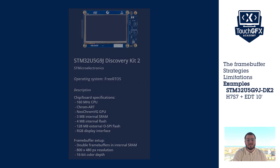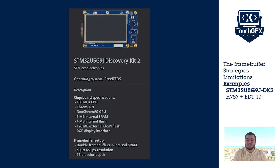When building for the STM32U5, we have to choose a framebuffer strategy. This board has 3 megabytes of internal RAM, which is more than enough, so we can use a double framebuffer. With a color format of RGB 565 at 16 bits, we have a total framebuffer region size of 1.5 megabytes. Since we can fit a double framebuffer in internal memory, this is the best strategy for performance and is the preferred strategy here.